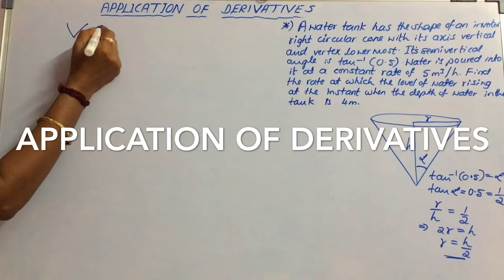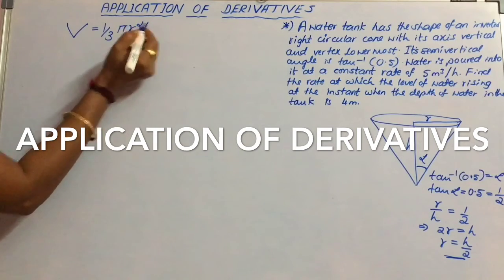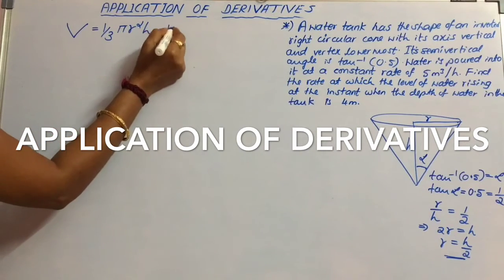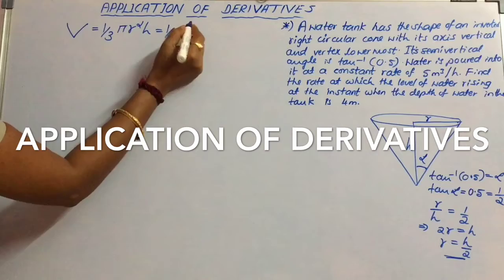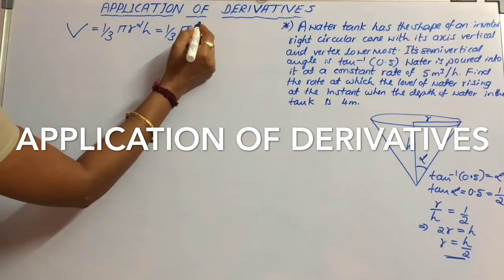V is equal to 1 by 3 pi r squared h, that is 1 by 3 pi. Replace r in terms of h now. r is equal to h by 2.